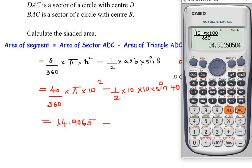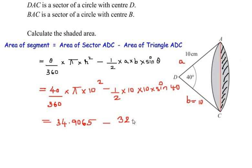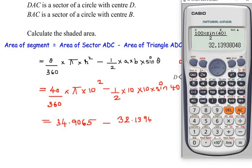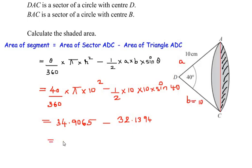Now let me calculate the second part of it. So we have 10 times 10 is 100 times sin 40 over 2. So here we get it as 32.1394. So let us check how much we get the value by subtraction. 34.9065 minus 32.1394 will give you the answer of 2.7671 centimeters squared because we are finding the area.